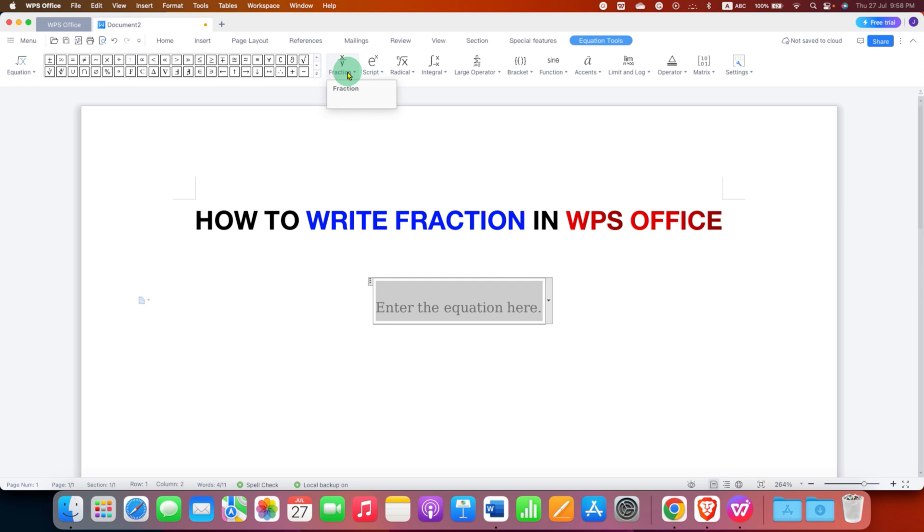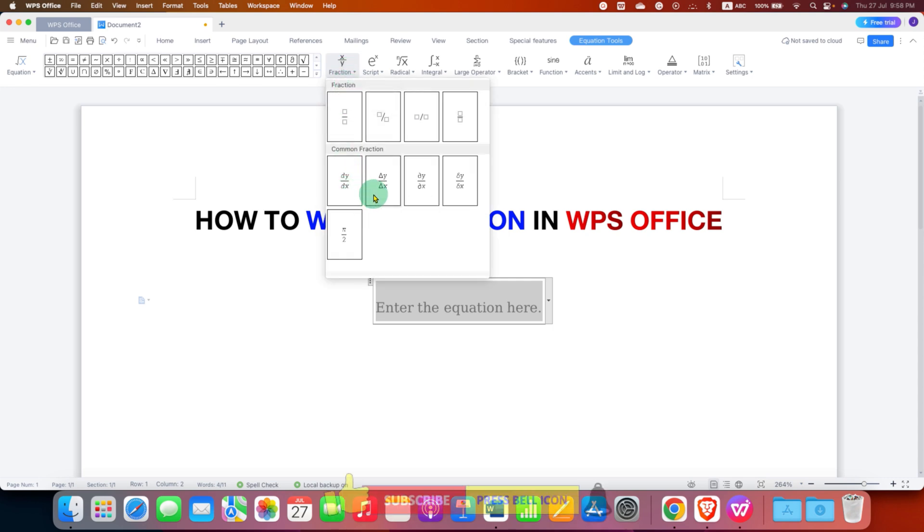You just have to click on the dropdown, and if you are writing math equations, then you can use these pre-templates. Or if you want to write the numbers, then just select the first option, Stacked Fraction, or the next option, Screwed Fraction. So I am selecting here Stacked Fraction.